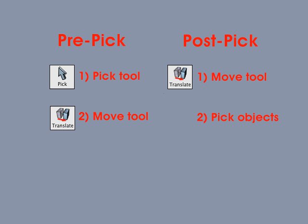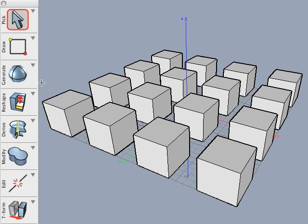You can either pre-pick or post-pick objects for your operations. With the pre-pick method, use the pick tool first to pick the objects, then select the tool to be used on them second. Using the post-pick method, you select the tool first, then pick the objects with that tool without using the pick tool. We will show an example of these two picking methods using the move tool. Keep in mind that the same technique is used for other tools as well.